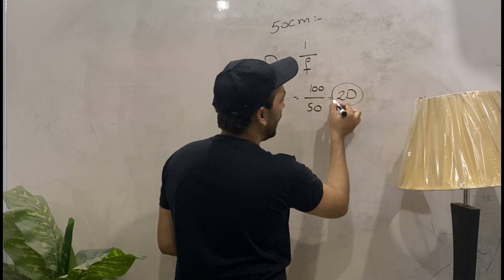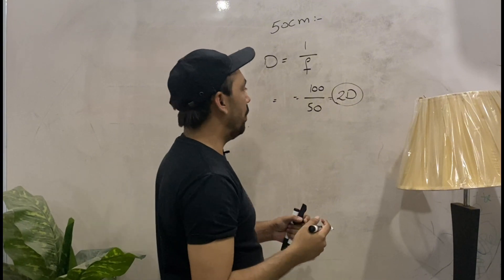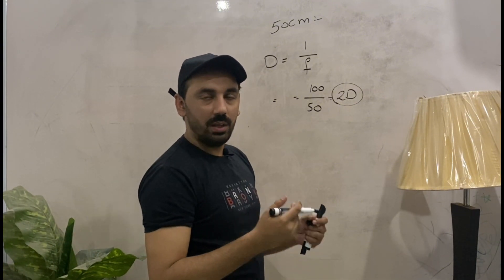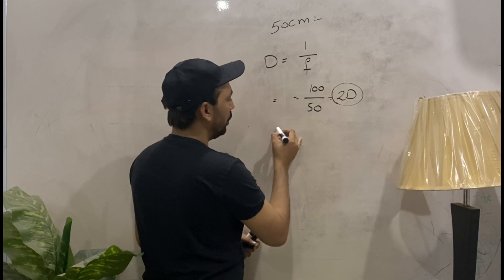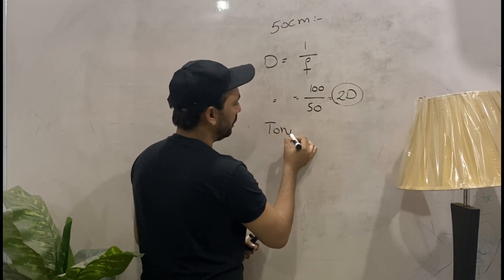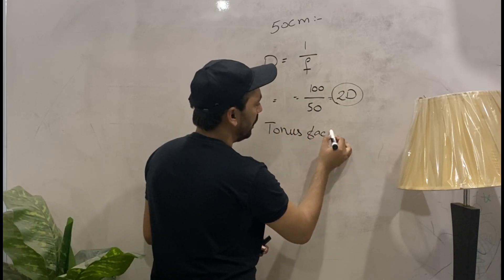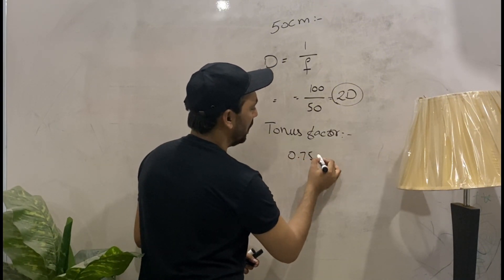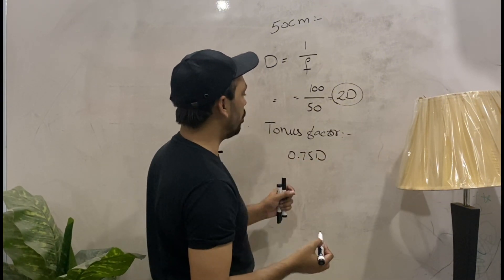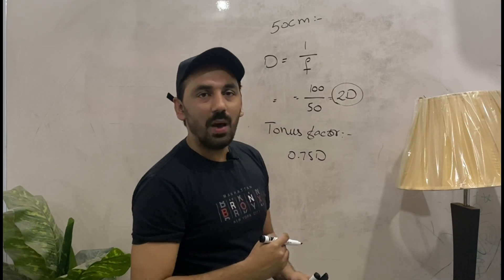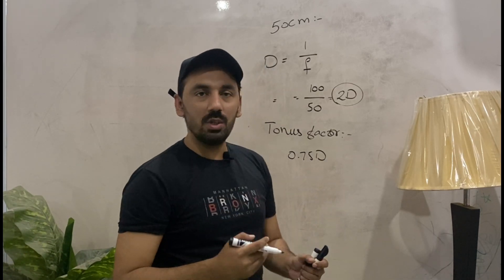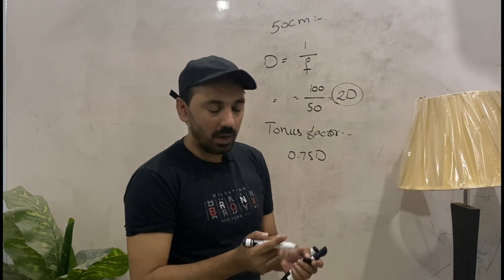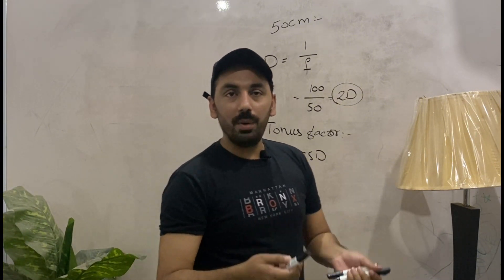Now the very important crux of this lecture: the tonus factor. The tonus factor in Mohindra retinoscopy is 0.75 diopters. You can consider this 0.75 as the tonus factor, or you can consider it as the normal lag of accommodation.